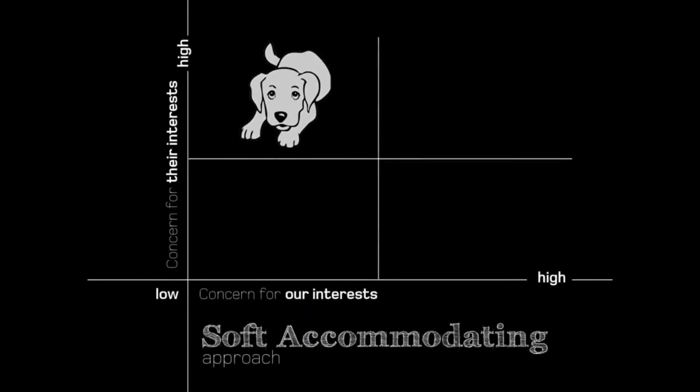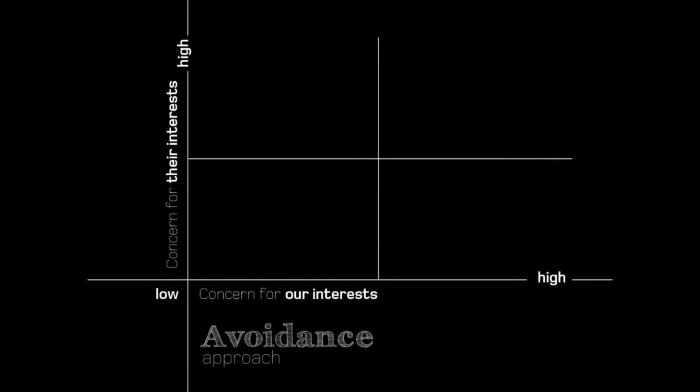Oftentimes inside organizations, inside families, there's a lot of conflict, and conflict is something we get uncomfortable with and tend to avoid. So oftentimes we use this approach of avoidance — we don't talk about it, it's too difficult — and so we're not showing concern for our interests, and we're not showing concern for the other side's interests.